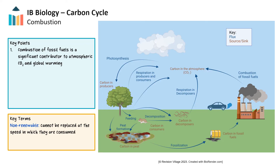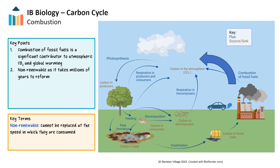Combustion of fossil fuels plays a significant role in the carbon cycle. Fossil fuels like coal, oil, and gas are non-renewable organic resources that store ancient carbon. Their combustion releases large amounts of carbon dioxide from their source, contributing to the enhanced greenhouse effect and global warming. These fossil fuels, formed over millions of years, are quickly released from sinks through combustion to power cars and coal power plants. Because there is an imbalance between the release of carbon from carbon sources and uptake of carbon into storage via carbon sinks, this leads to a significant increase in atmospheric carbon dioxide, exacerbating climate change.